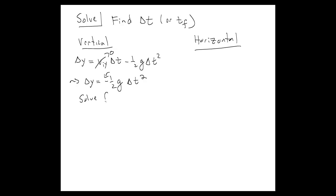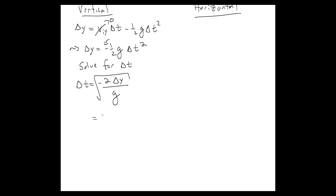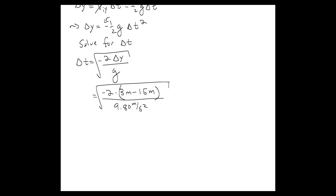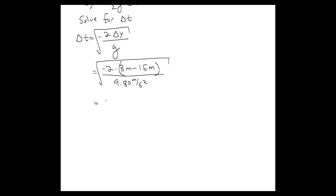We can solve this for delta t — the time it takes for the ball to fall and hit the basketball hoop. We find delta t = sqrt(−2 · delta y / g). Putting in our displacement carefully: the initial y position is 15 meters and the final y position is 3 meters, so delta y = 3 − 15. Over 9.80 meters per second squared, take the square root of the whole thing. That delta y is a real displacement: 3 meters minus 15 meters. We should get something around 1.6 seconds for the time it takes for the ball to fall.